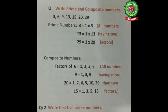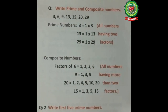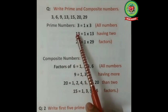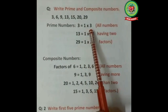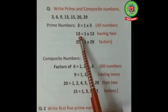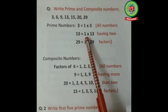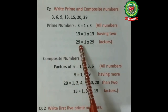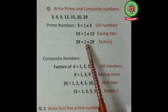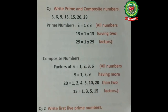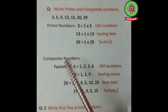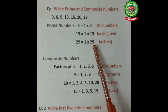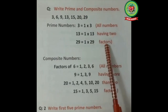Now let's differentiate prime and composite numbers with an example. For the prime numbers: 3 has factors 1 and 3; 13 has factors 1 and 13; and 29 has factors 1 and 29. Students, you can see that all prime numbers have exactly two factors — either 1 or the number itself.